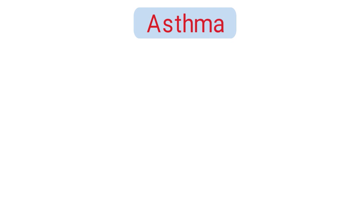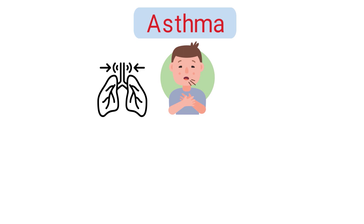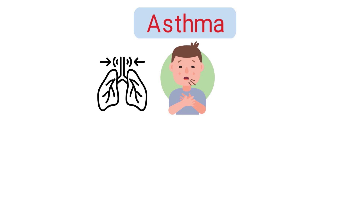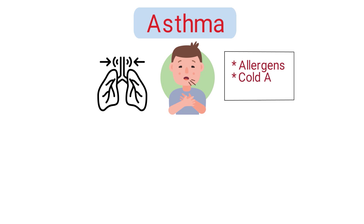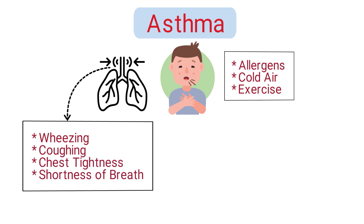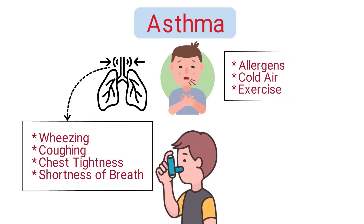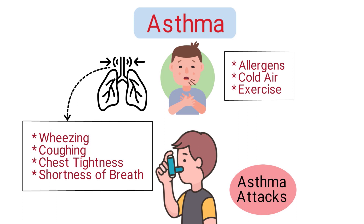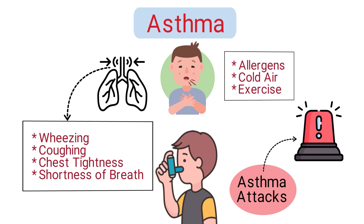Next up is asthma, which is a chronic respiratory condition where the airways become inflamed and narrowed, often in response to specific triggers like allergens, cold air, or exercise. This narrowing can cause periods of wheezing, coughing, chest tightness, and shortness of breath. While it can be managed with medications and lifestyle adjustments, severe episodes known as asthma attacks can be life-threatening.